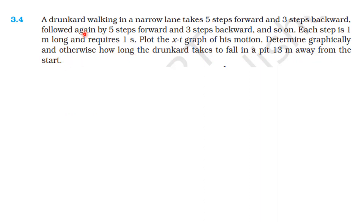The drunkard takes 5 steps forward and 3 steps backward. Each step is 1 meter long. This is the XT graph we need to construct.